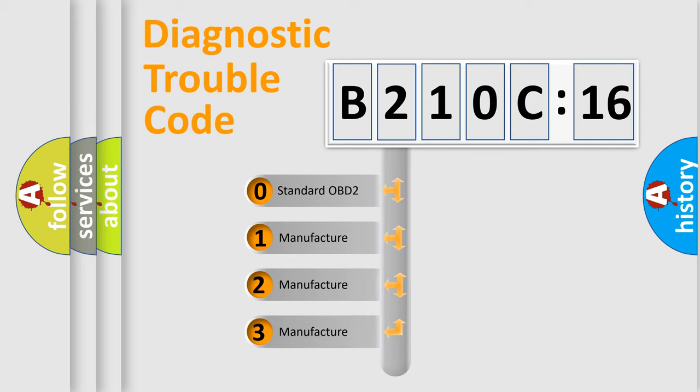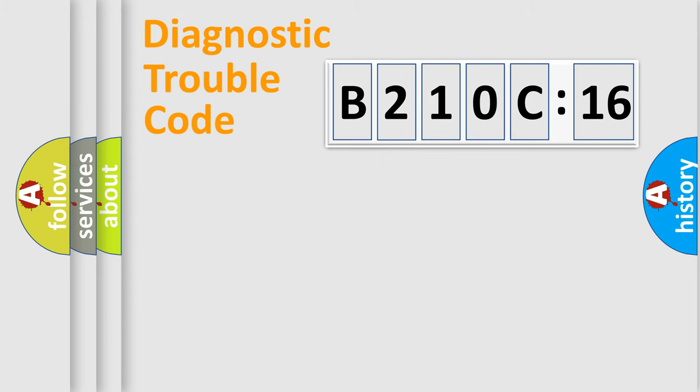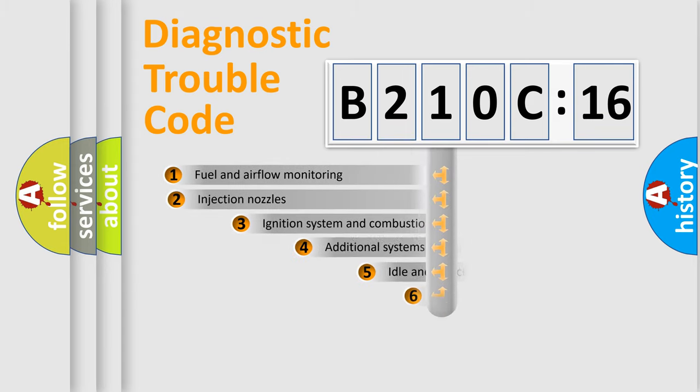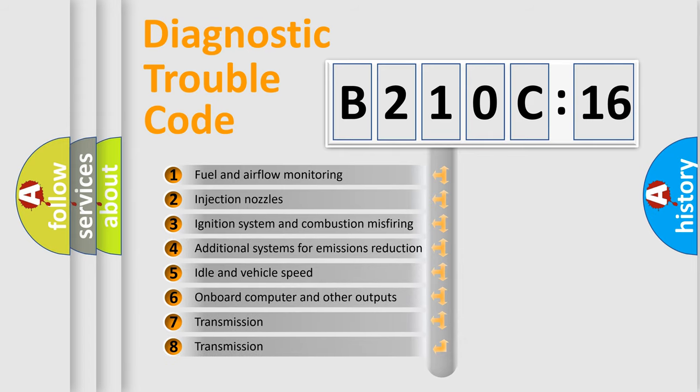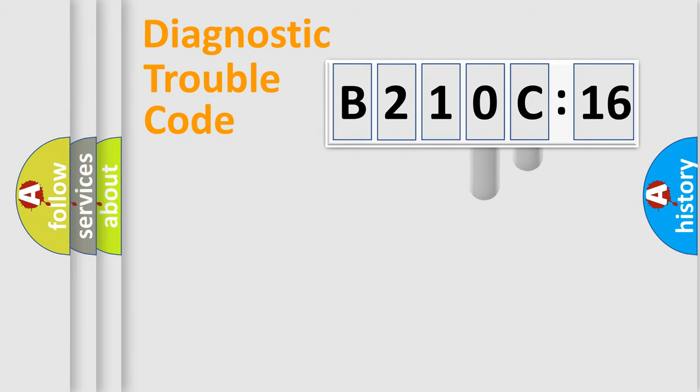If the second character is expressed as zero, it is a standardized error. In the case of numbers 1, 2, 3, it is a manufacturer-specific expression of the car-specific error. The third character specifies a subset of errors. The distribution shown is valid only for the standardized DTC code. Only the last two characters define the specific fault of the group.